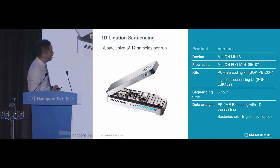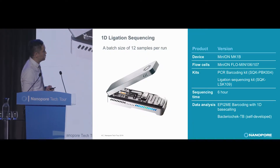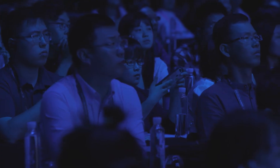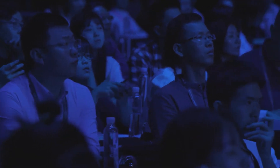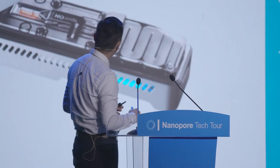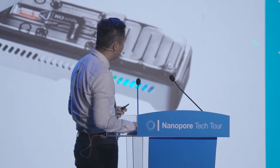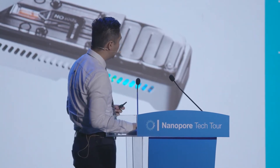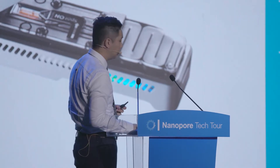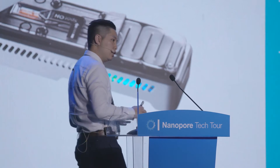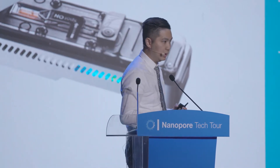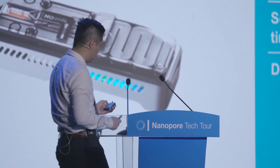We use the barcode PCR and then ligation-based library preparation. By that time, the rapid kit was not yet available, so we sequenced the samples for six hours, pooling 20 samples per run to save money. We analyze with our home-developed software called BacteroTrack, which can directly translate the raw reads into a clinician-friendly report.